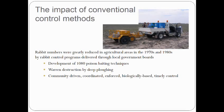However, myxomatosis on its own wasn't enough to control rabbit damage in agricultural areas until the development of 1080 poison-baiting techniques and warren ripping, which were widely applied in the 1970s and 80s through programs delivered largely through local government boards.